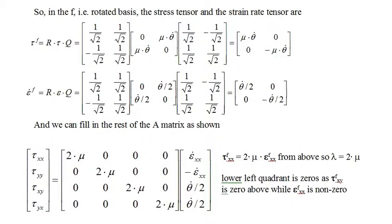Now we convert the stress and strain rate tensors from the viscosity law demonstration to F coordinates rotated 45 degrees from the original E coordinates. In the rotated coordinates, both the stress and strain rate tensors are diagonal matrices. In rotated coordinates the normal x strain rate is theta-dot over 2 and the normal x stress is mu times theta-dot, therefore lambda equals 2 times mu. Since the normal strain rates are non-zero while the shear stress is zero, we can fill in the lower quadrant of the relationship matrix with zeros, and the matrix is complete.